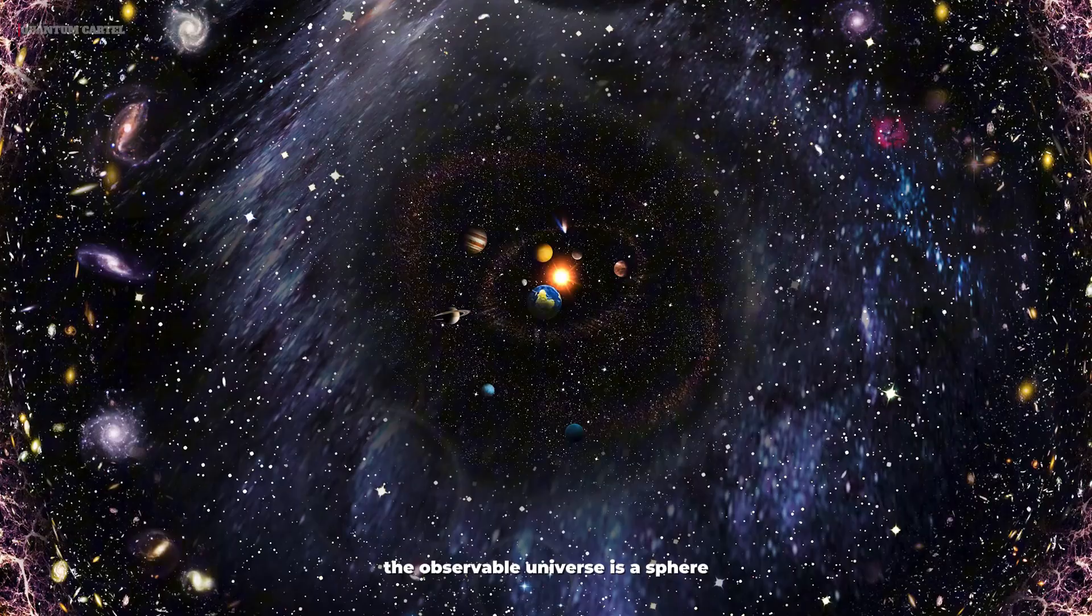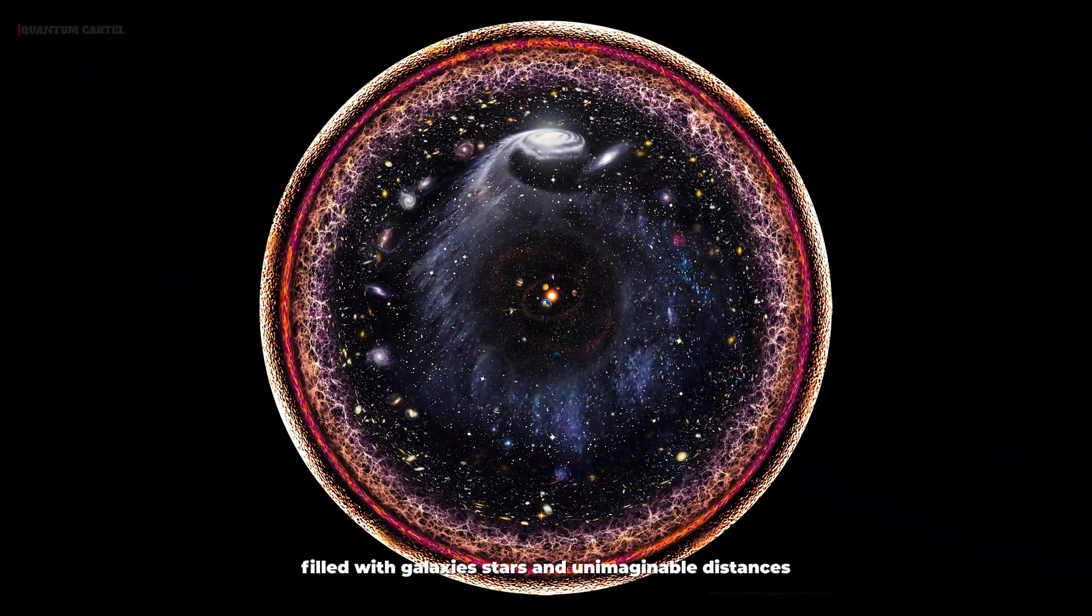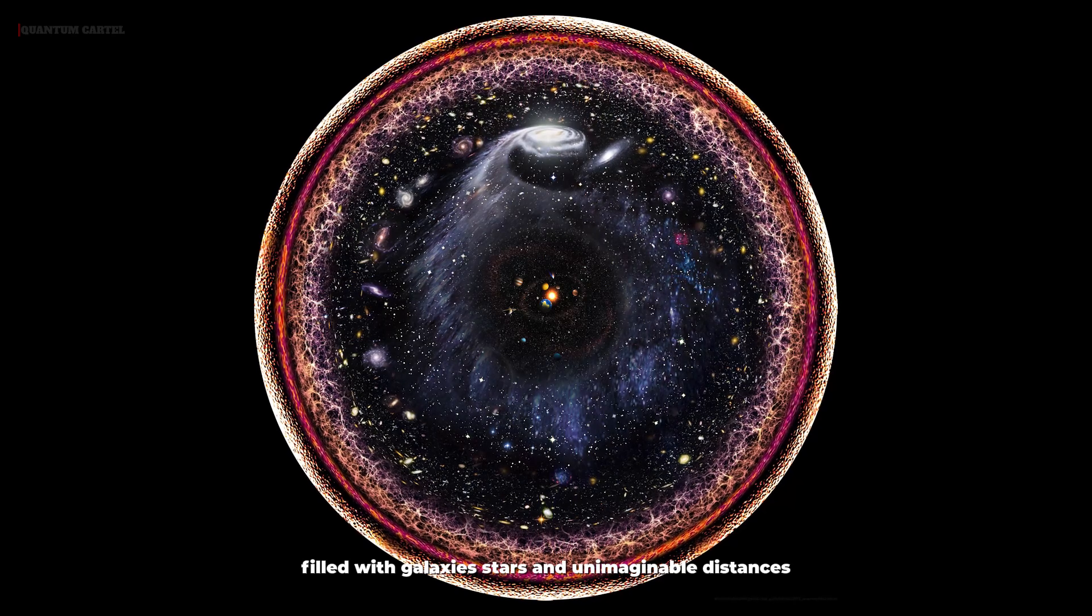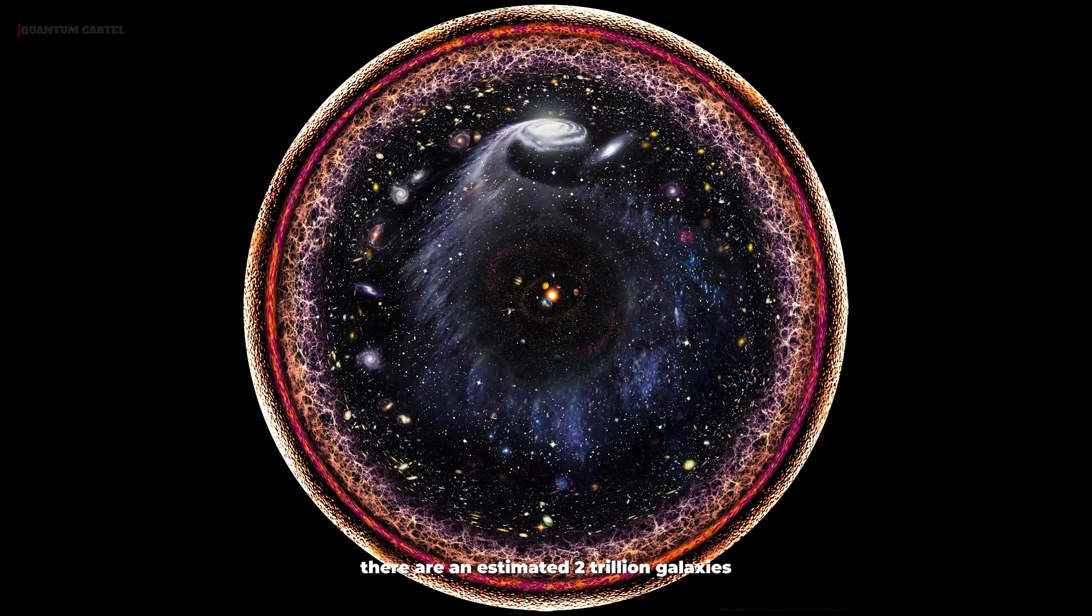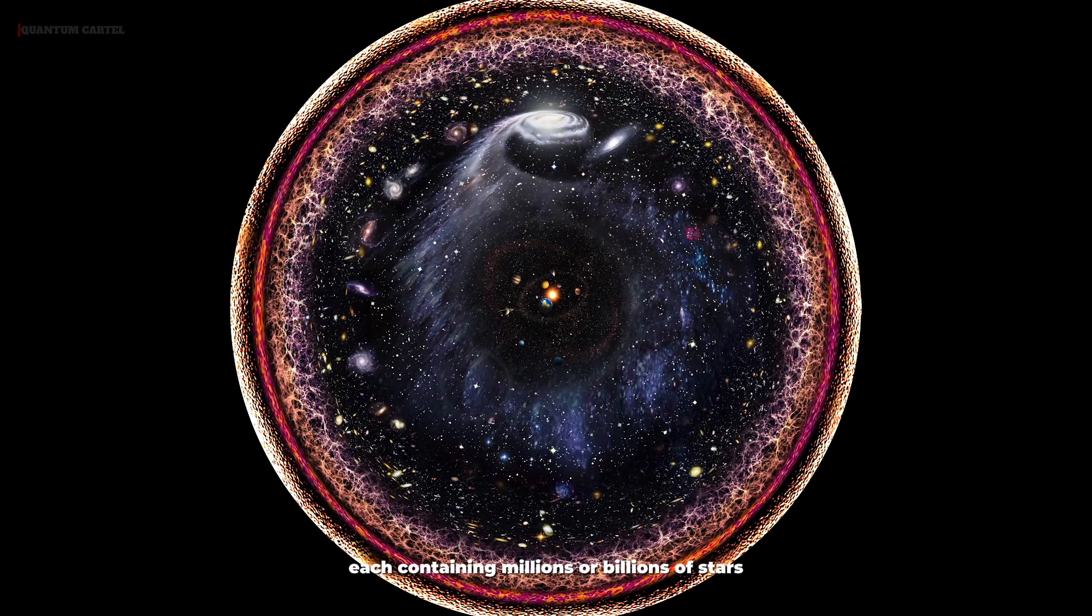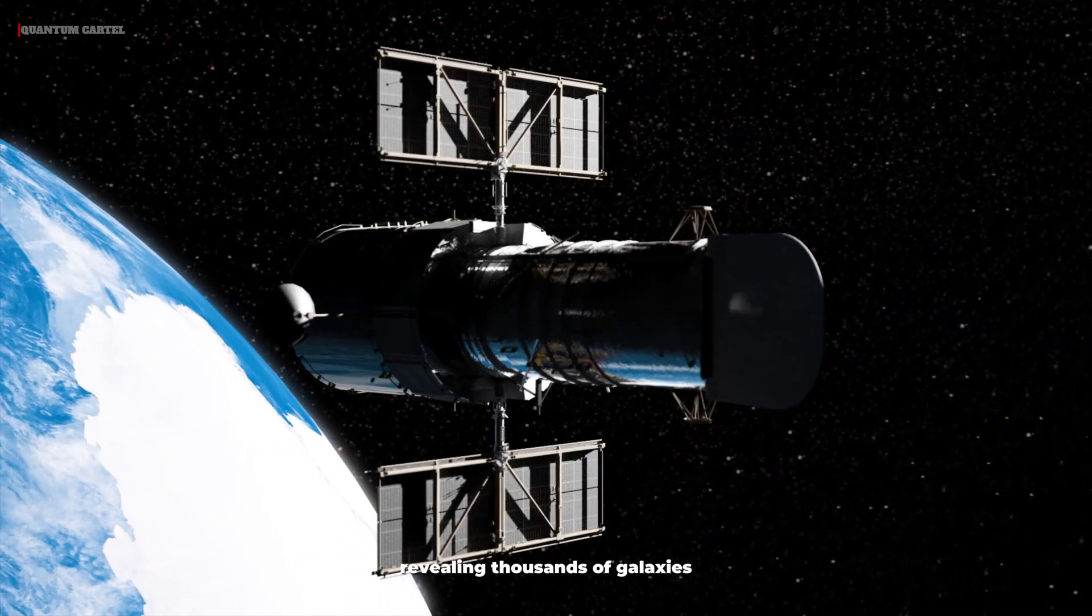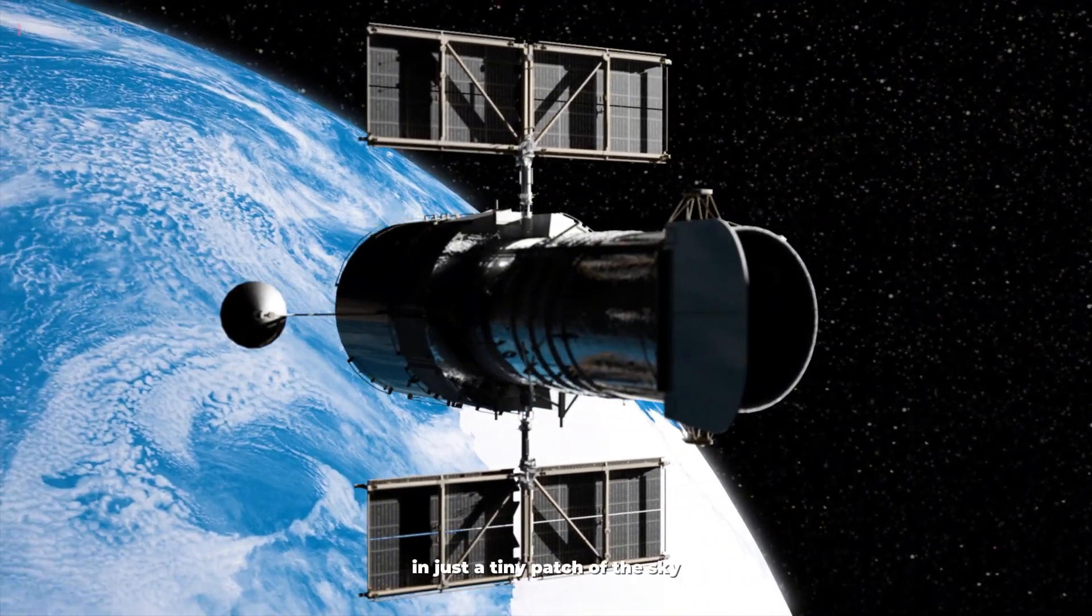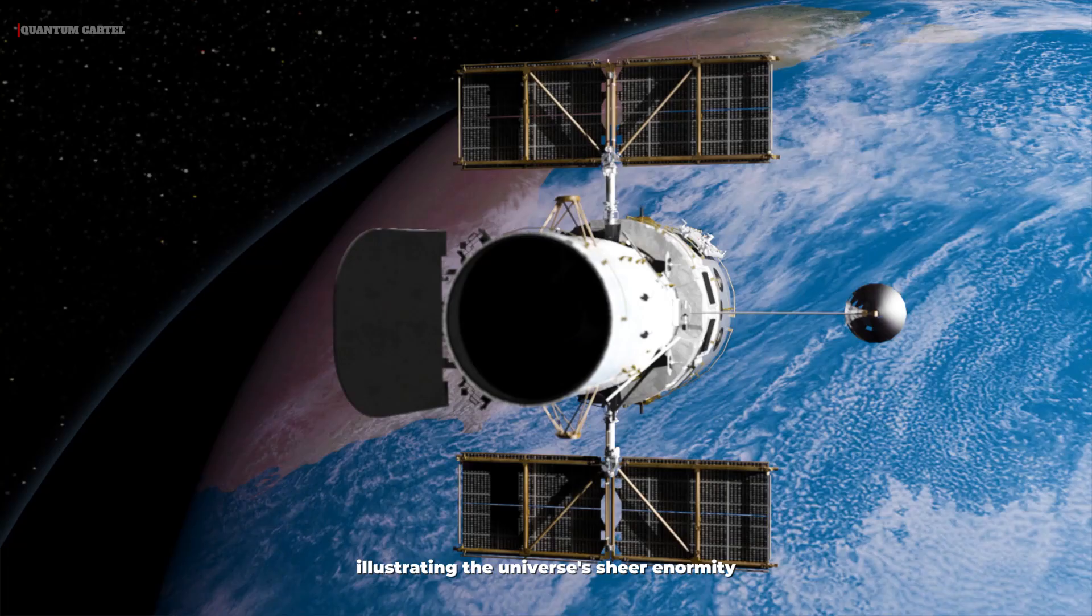The observable universe is a sphere with a diameter of about 93 billion light-years, filled with galaxies, stars, and unimaginable distances. Within this expanse, there are an estimated 2 trillion galaxies, each containing millions or billions of stars. The Hubble Space Telescope has captured images revealing thousands of galaxies in just a tiny patch of the sky, illustrating the universe's sheer enormity.